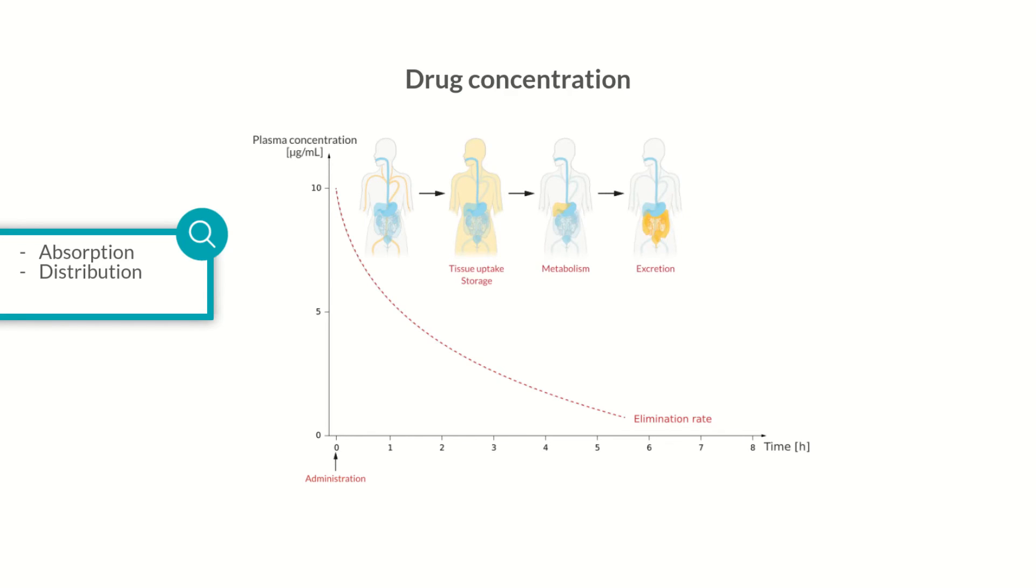If a systemic drug is administered through another dosage form, its plasma concentration is initially zero and starts to increase once it's absorbed into the bloodstream. This is referred to as the absorption rate. The interaction between the absorption rate and the elimination rate results in the characteristic time course of the plasma concentration of the drug.